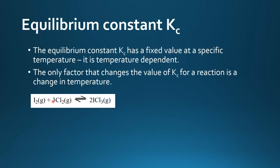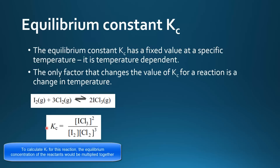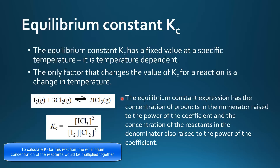Here we have a reaction: iodine reacting with chlorine to form iodine trichloride. To write the equilibrium constant expression, we write Kc equals the concentration of the products — square brackets denote concentration — raised to the power of the coefficient, which is 2. On the bottom we have the concentration of the reactants, also raised to their coefficients, so chlorine is raised to the power 3. To recap: the equilibrium constant expression has the concentration of products in the numerator and the concentration of the reactants in the denominator, both raised to the power of their coefficients.